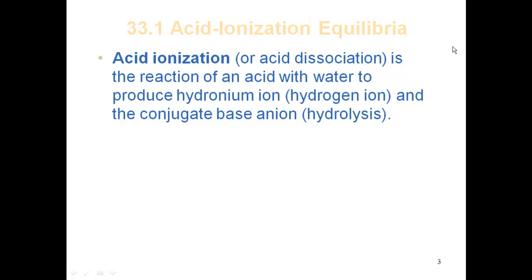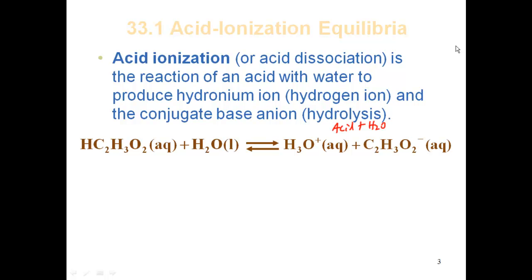Acid ionization, or acid dissociation, is a reaction of an acid with water to produce hydronium ions — or hydrogen ions — and the conjugate base anion. This whole process of acid plus water is referred to as hydrolysis. We write the reaction the same way we did with the strong acid: you take your weak acid, water acts as the base, you donate a proton from the acid to water, which forms hydronium ions and acetate ions. It's exactly the same as the strong acid, except instead of a single arrow, we have a double arrow — representing that there's some ionization and equilibrium associated with it.